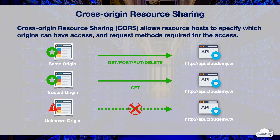In this example, api.cloudami.tv allows all HTTP methods from the same origin. It only allows GET requests from the trusted origin, and restricts all methods from unknown origins.